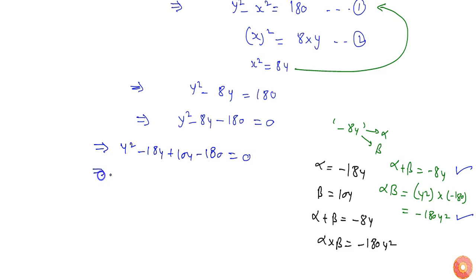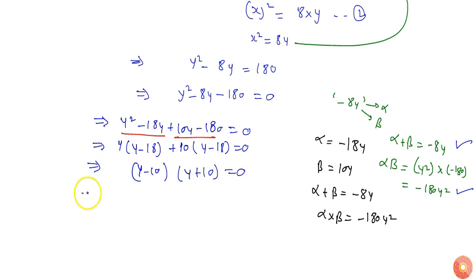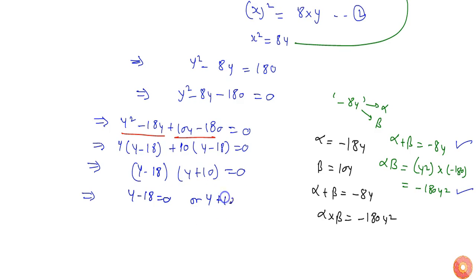So I can split the middle term as minus 18Y plus 10Y, giving Y squared minus 18Y plus 10Y minus 180 equals 0. Making pairs: Y common from the first pair gives Y(Y minus 18), and taking 10 common from the second pair gives 10(Y minus 18). So the factored form is (Y minus 18)(Y plus 10) equals 0.